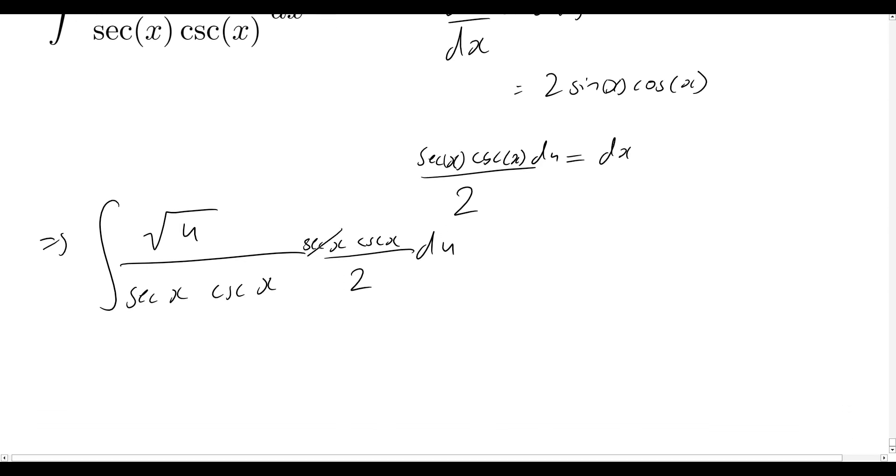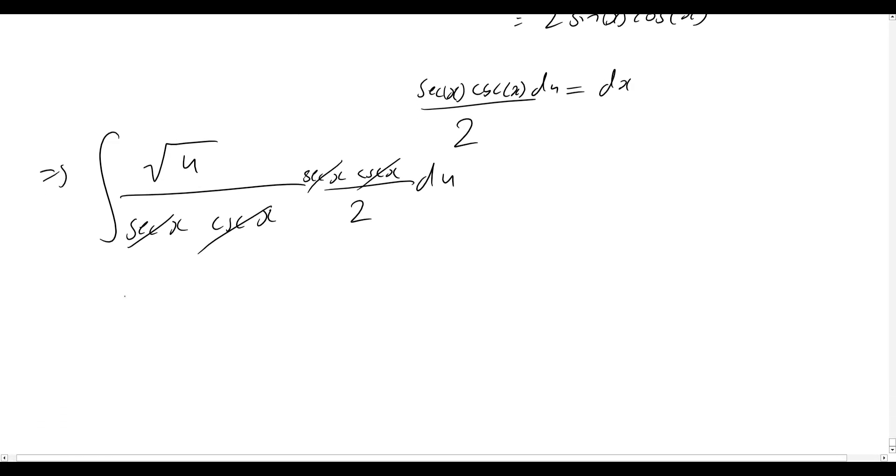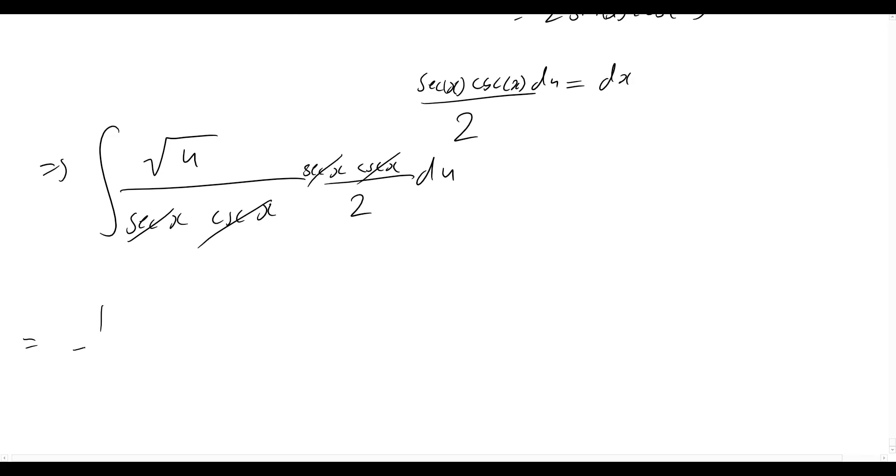So really quick, we see that our sec will cancel out, the cosec will cancel out, and all we're left over with is a one half out the front times by the integral of the square root of u du.